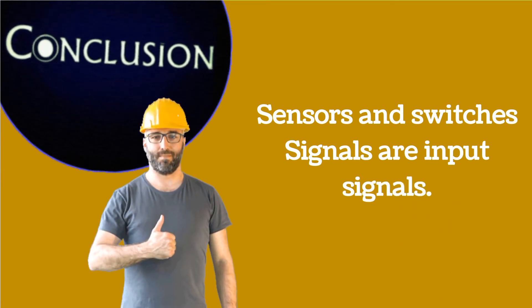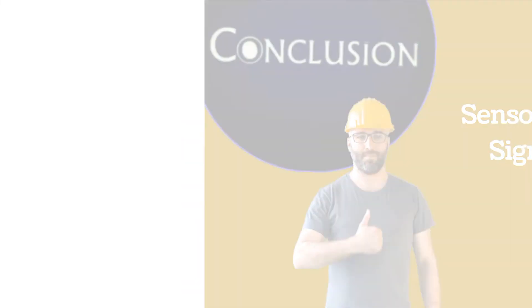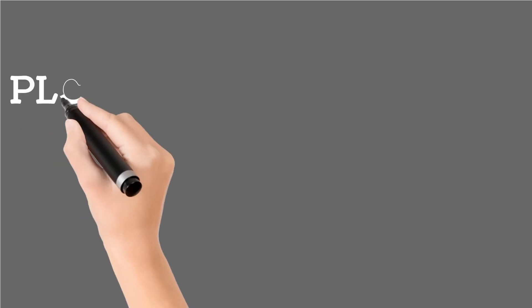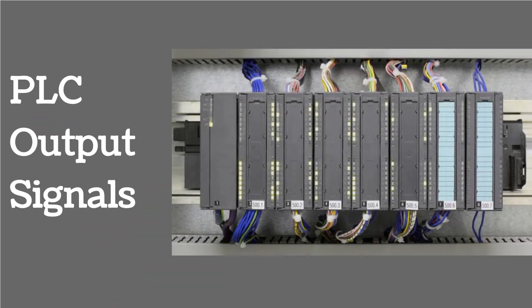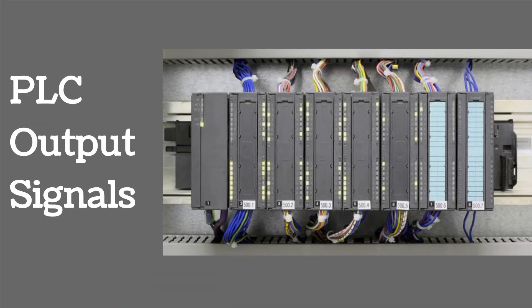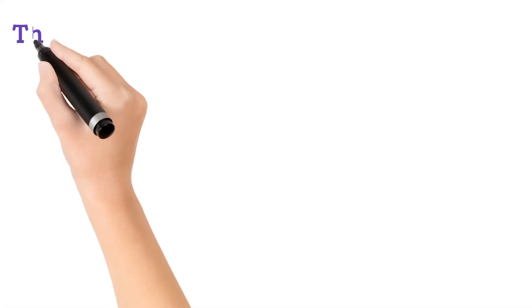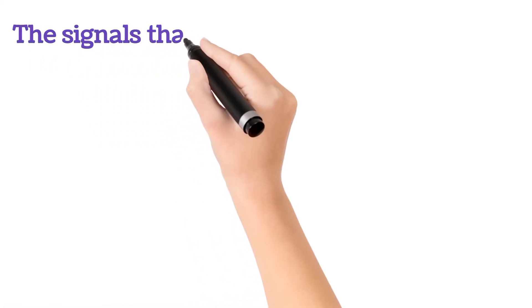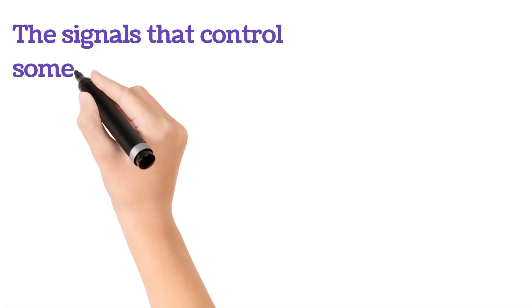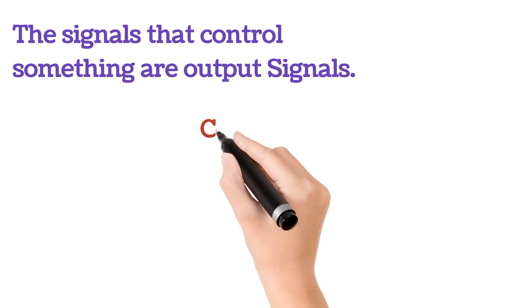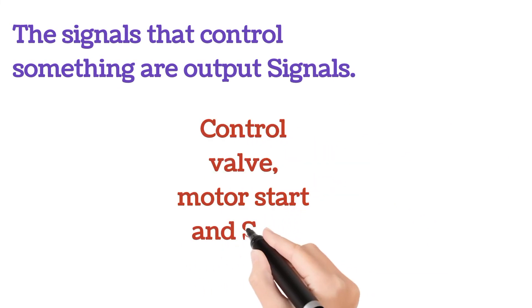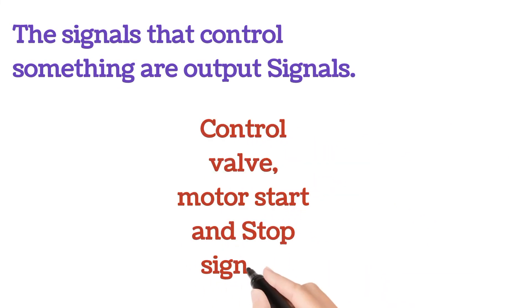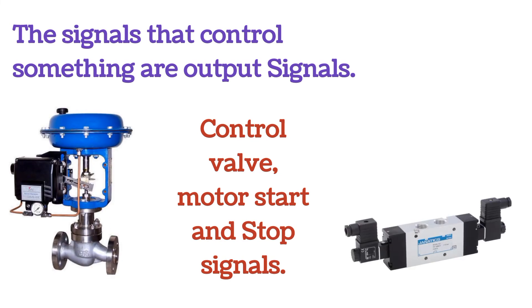Now we will discuss PLC output signals. The signals that control something are output signals. For example, the signal for control valve operation and motor start/stop signals are output signals.